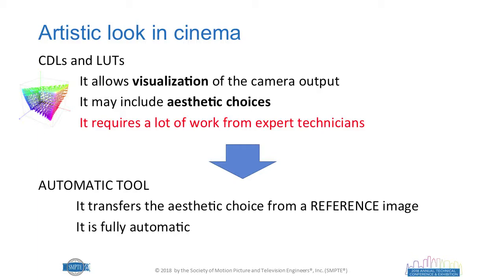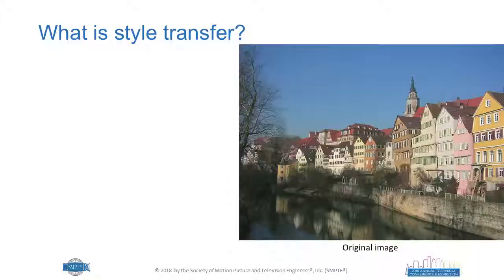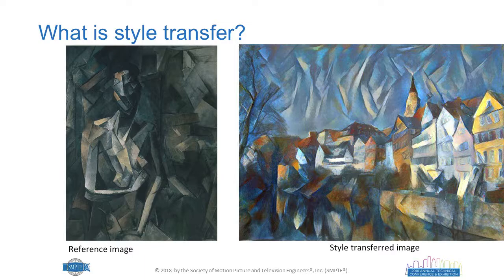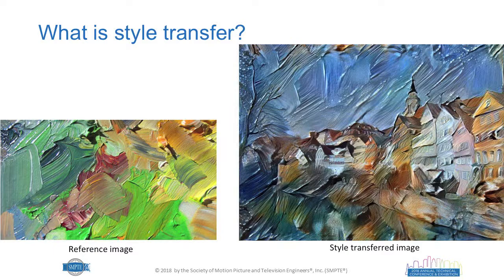Before explaining our method, I'll do a recap of related work and explain what style transfer is. There is extensive work in the academic literature. Using CNNs and neural networks, style transfer takes an original image and, given a reference image, transfers the style to the original image. This was demonstrated by Gatys in 2016, where changing the reference image produces very different results. Initially, the reference images were paintings, and this work was later adapted to be photorealistic.